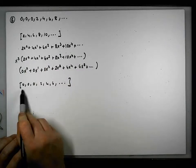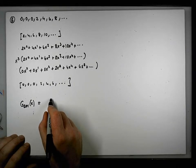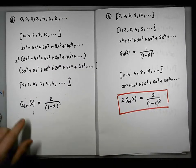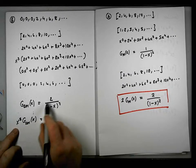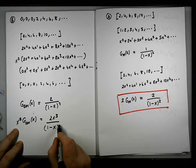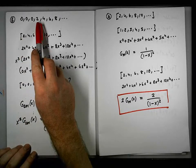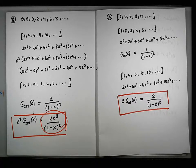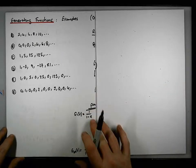If we multiply the generating function for the even natural numbers by x cubed, we get the generating function for this sequence. The even naturals generating function is two over one minus x squared, so x cubed times g of double the naturals gives us two x cubed over one minus x squared. This is the required generating function — the even naturals shifted across by three places.